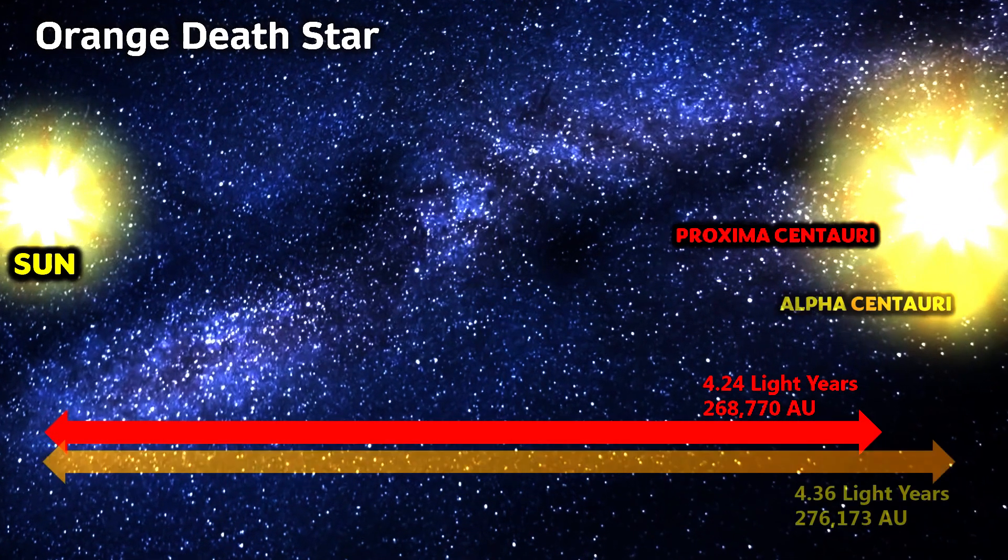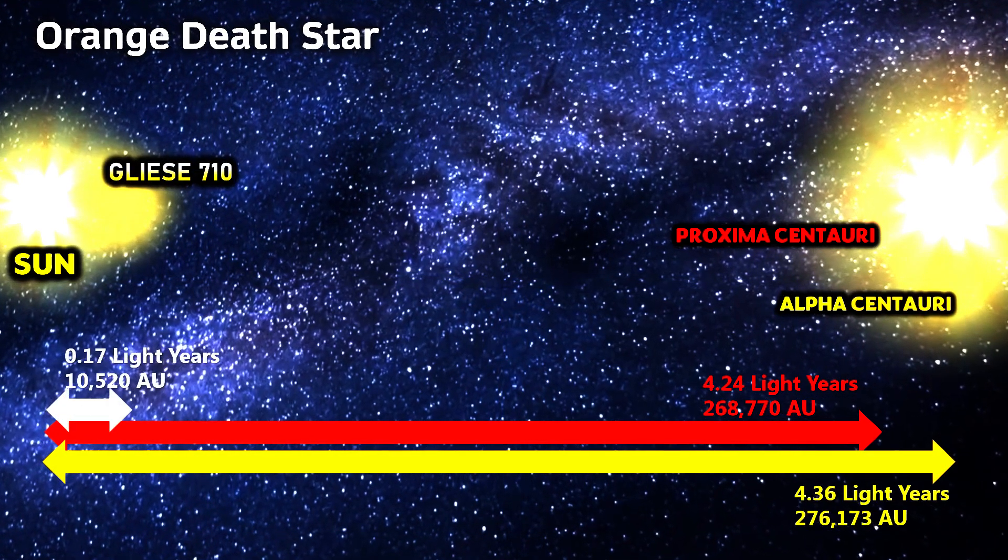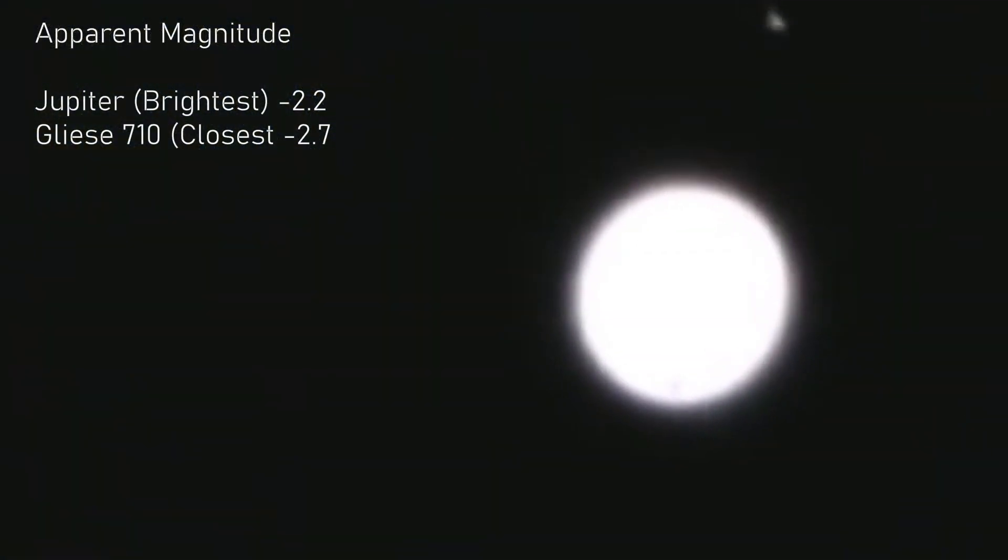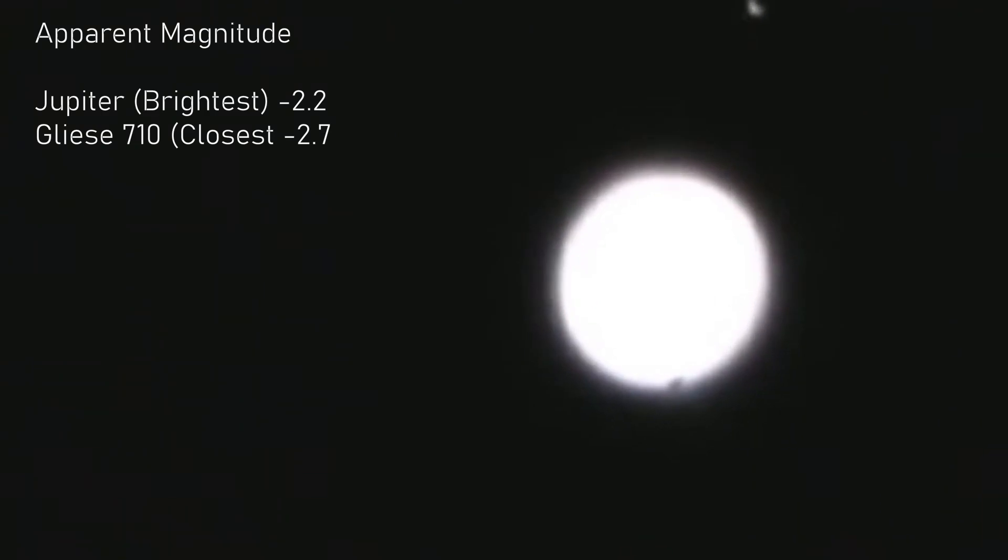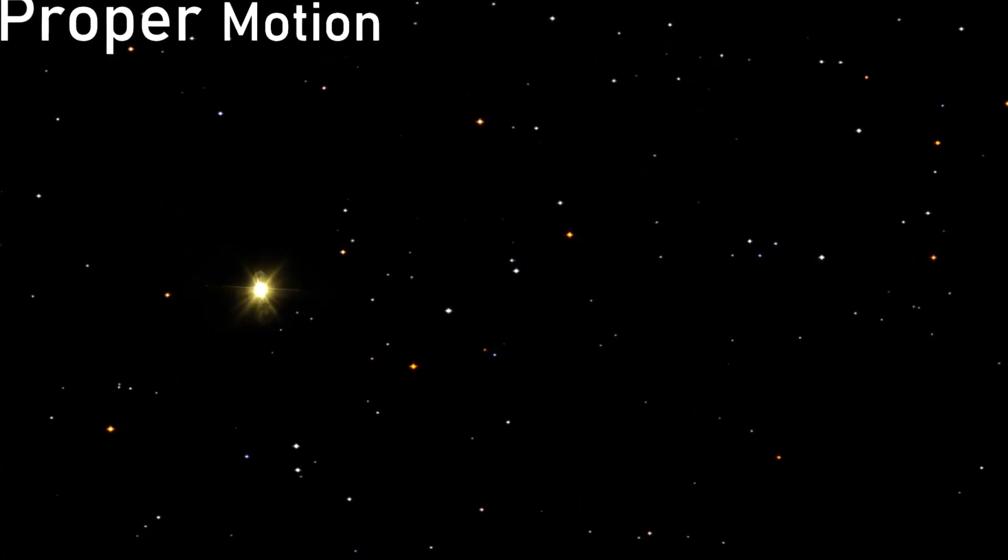This close proximity to our solar system will cause Gliese 710 to shine with a brilliance comparable to the brightest planets in our night sky, boasting an apparent visual magnitude of approximately minus 2.7 at peak, or something similar to Jupiter at its almost brightest now. Gliese 710's movement across the sky, known as proper motion,